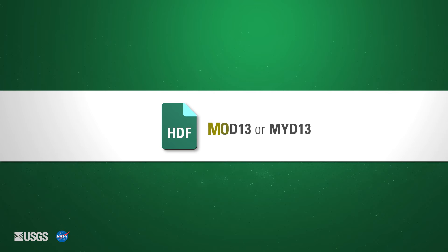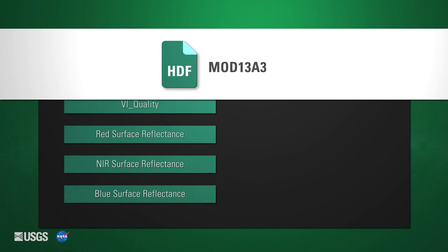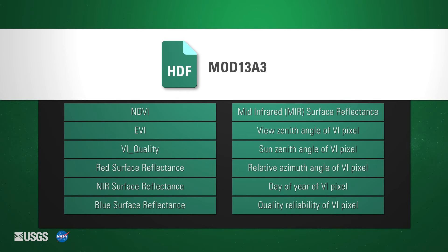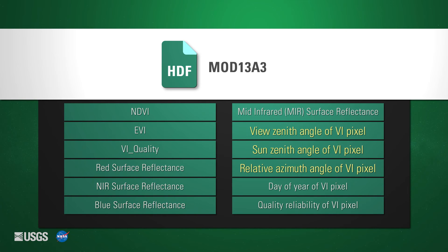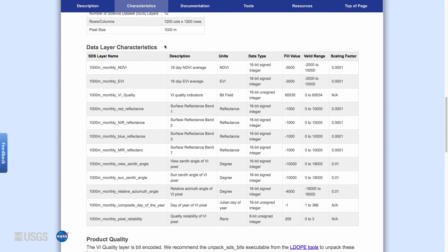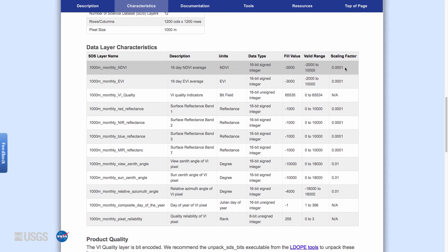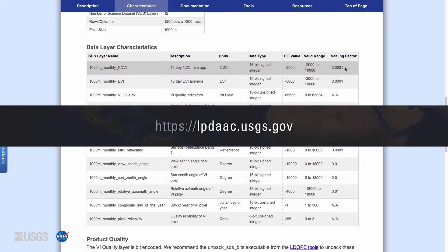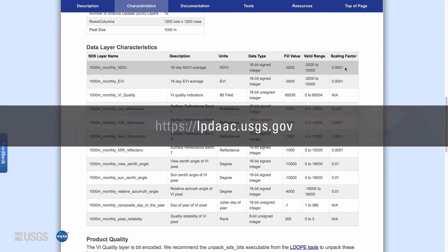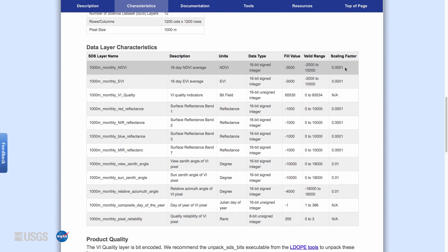MODIS vegetation indices products are distributed as Hierarchical Data Format, or HDF, files. The file name contains MOD13 indicating Terra MODIS observations, or MYD13 for Aqua MODIS observations. Here is a visual representation of the data stored within a single Terra MODIS version 6 monthly vegetation indices 1-kilometer level 3 gridded product MOD13A3 HDF file. The HDF file contains NDVI and EVI data, quality information for reflectance bands, information about angles of the Sun and satellite, and the day of the year. It is important to know that a scale factor must be applied to the NDVI and EVI data values before you begin using the data. To learn more about the specific scale factors, fill values, and valid ranges, please see the DOI landing page on the LP DAAC website at lpdaac.usgs.gov.